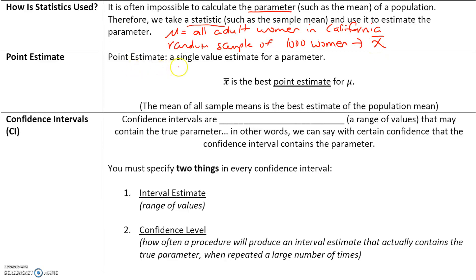Point estimate: this is a single-value estimate for a parameter — in other words, the best estimate for a parameter. X-bar, or the mean of all sample means, is the best point estimate for mu, which is the population mean.